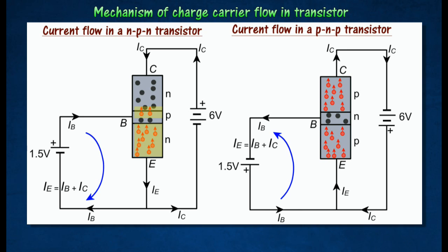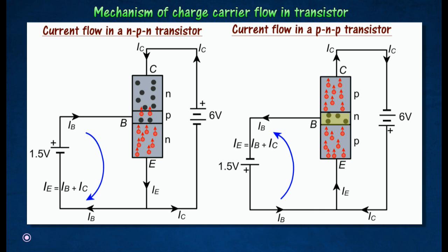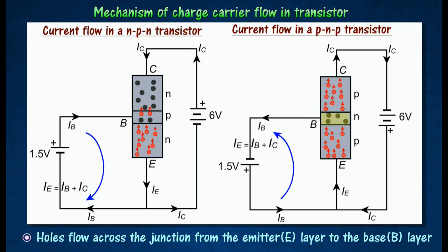When B is forward biased, electrons flow across the junction from the emitter E layer to the base B layer in an NPN transistor. Holes flow across the junction from the emitter E to the base B layer in a PNP transistor.